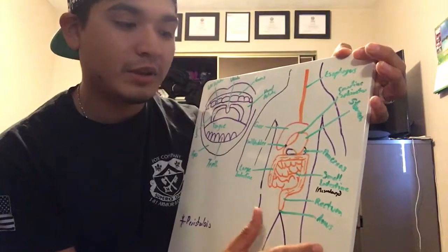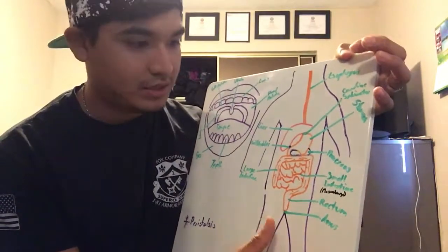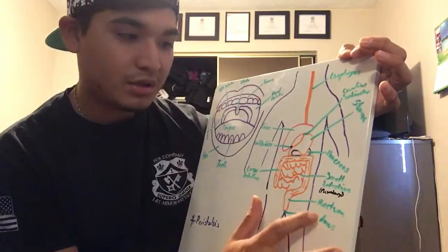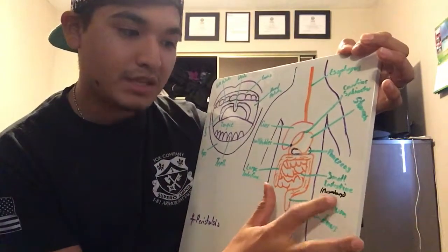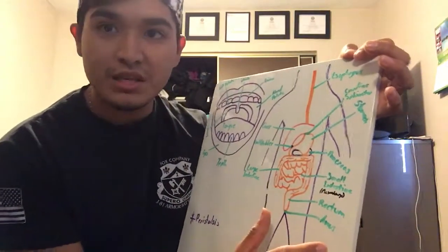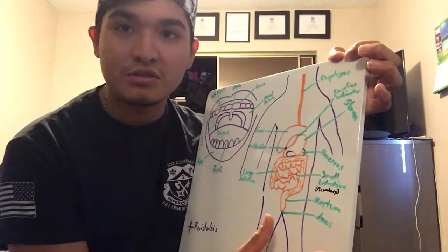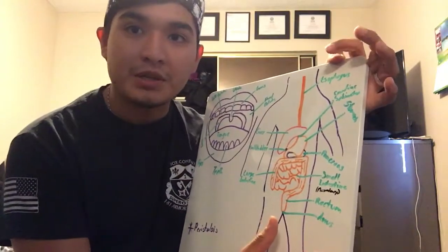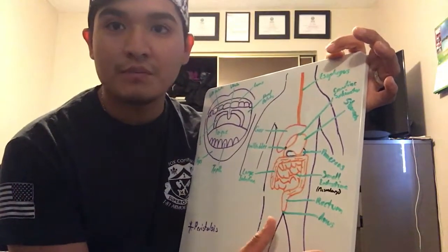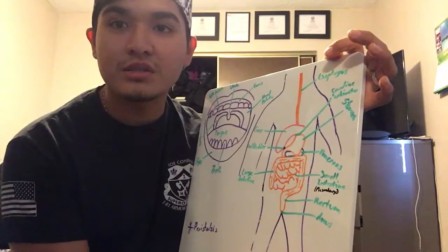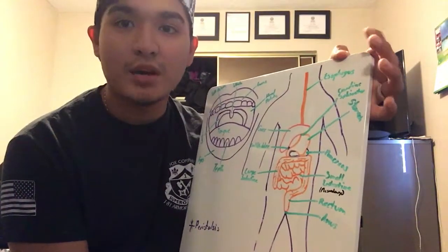What holds the small intestine in place is called the mesentery, which is a fold of tissue that attaches organs to the body wall.